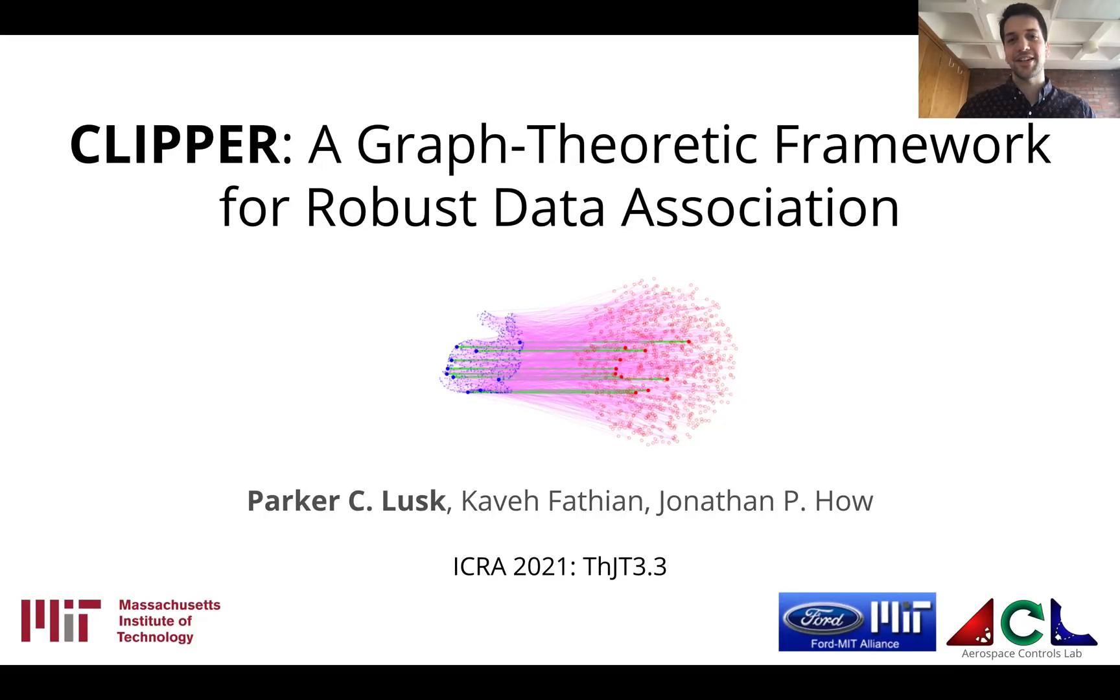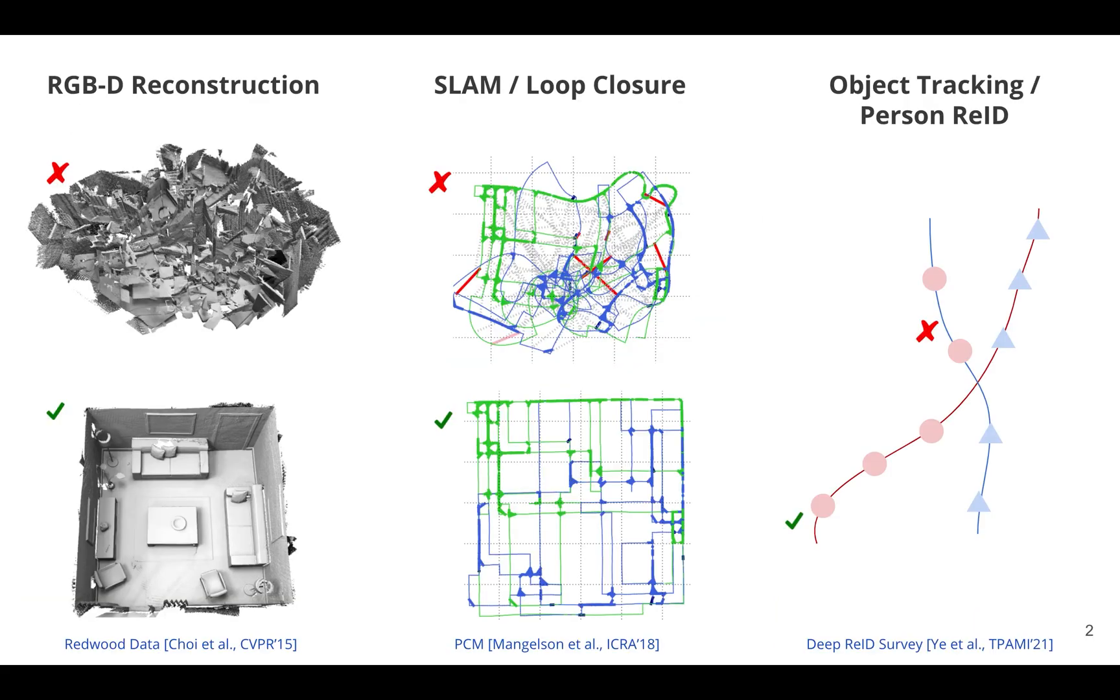Hi, I'm Parker and I'm delighted to be discussing Clipper, our algorithm for robust data association. Data association is the process of identifying the same object across multiple views and it's a fundamental challenge and component in robotic perception pipelines. It's well known in the community that incorrect data association can wreak havoc to the downstream estimation task.